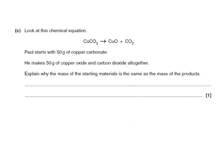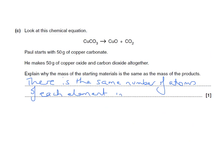Finally, a last question: look at this chemical equation — CuCO3 → CuO + CO2. Paul starts off with 50g of copper carbonate and makes 50g of copper oxide and carbon dioxide altogether. Explain why the mass of the starting materials is the same as the mass of the products. It's not sufficient to say 'by the law of conservation of mass' — what we have to say is that there is the same number of atoms of each element in the reactants as in the products.